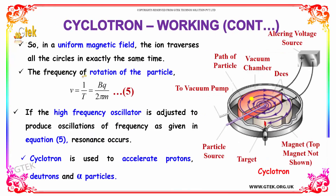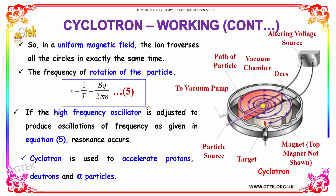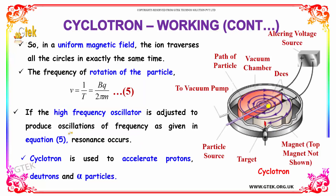In a uniform magnetic field, the ion traverses all circles in exactly the same time. The frequency of rotation of the particle is given by ν = 1/T = BQ/(2πM). If the high frequency oscillator is adjusted to produce oscillations of this frequency, resonance occurs. Cyclotron is used to accelerate protons, deuterons, and alpha particles.